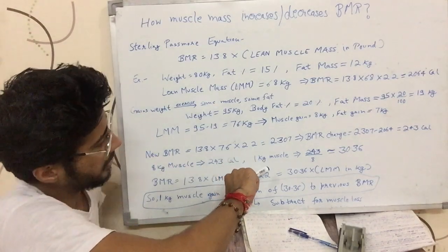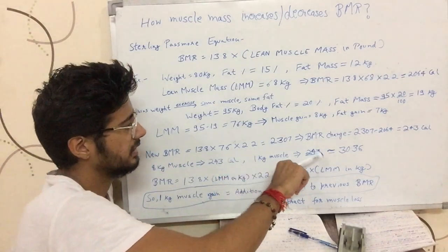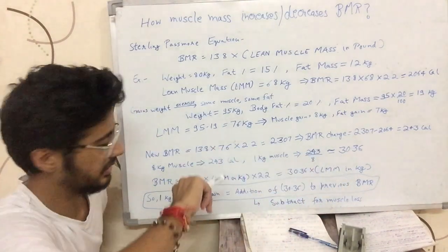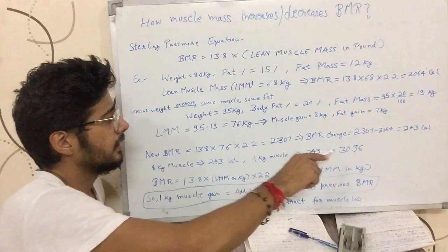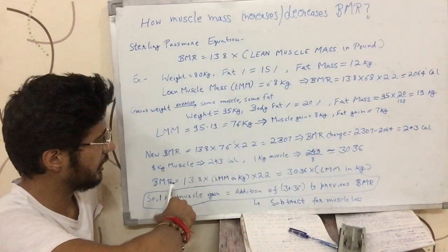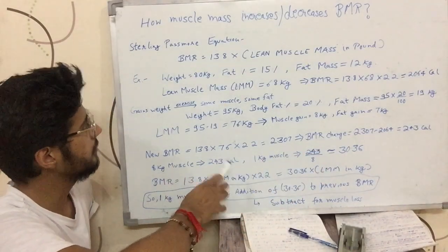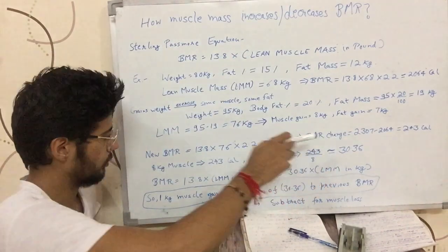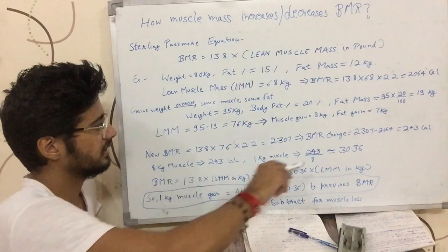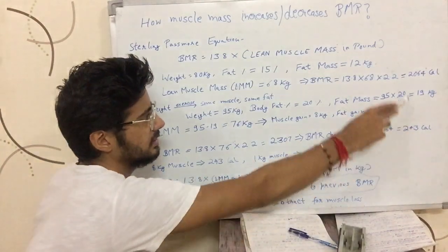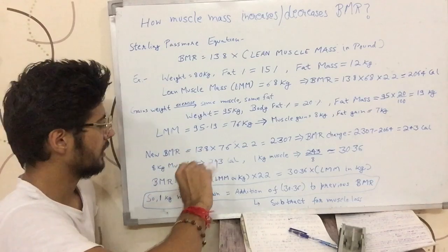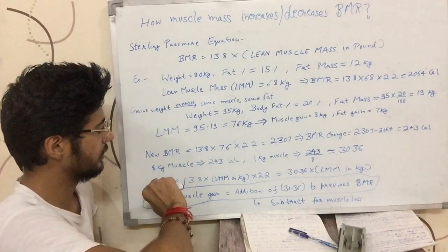If he had gained 1 kilogram of muscle, then his BMR would have gone up by 30.36 calories. How do we get that number exactly? This would not exactly be 30.36. That is why there is an approximately equal sign. I have omitted the decimals from here for the sake of making it easier to understand.